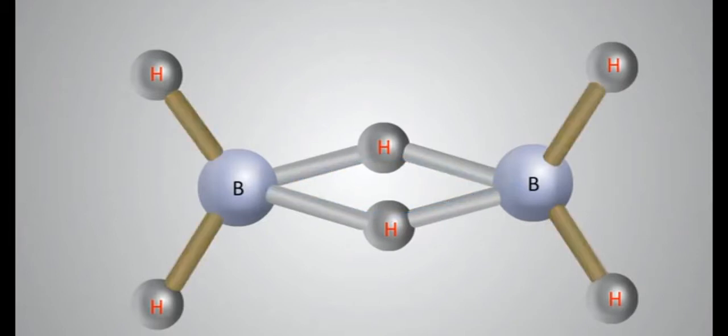There are two types of bonds in the molecule. The four terminal hydrogens are bonded by normal covalent bonds formed by sharing of one electron each by B and H atoms. The bridged hydrogens are different than the normal electron pair bonds.